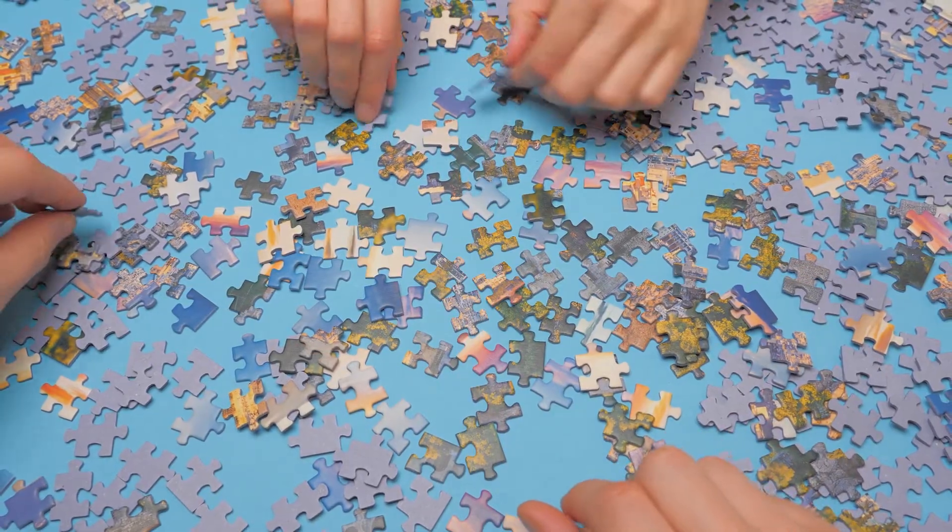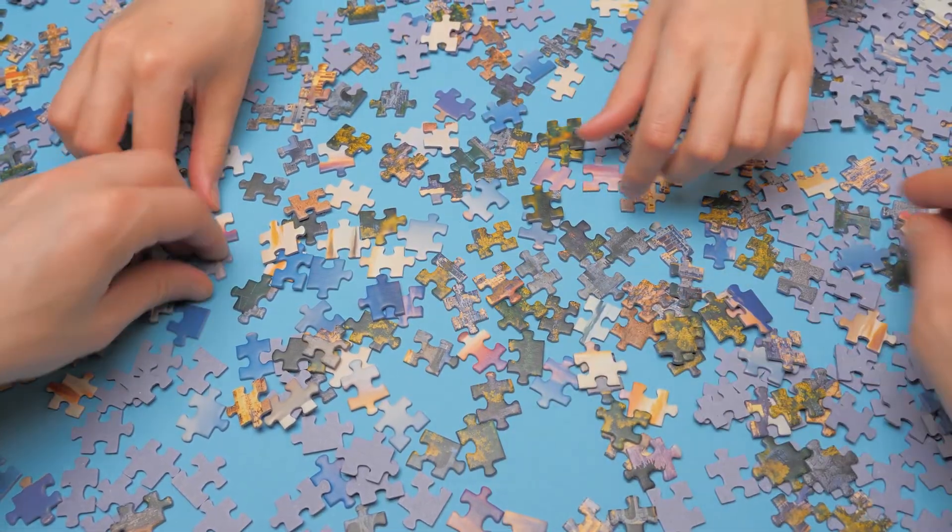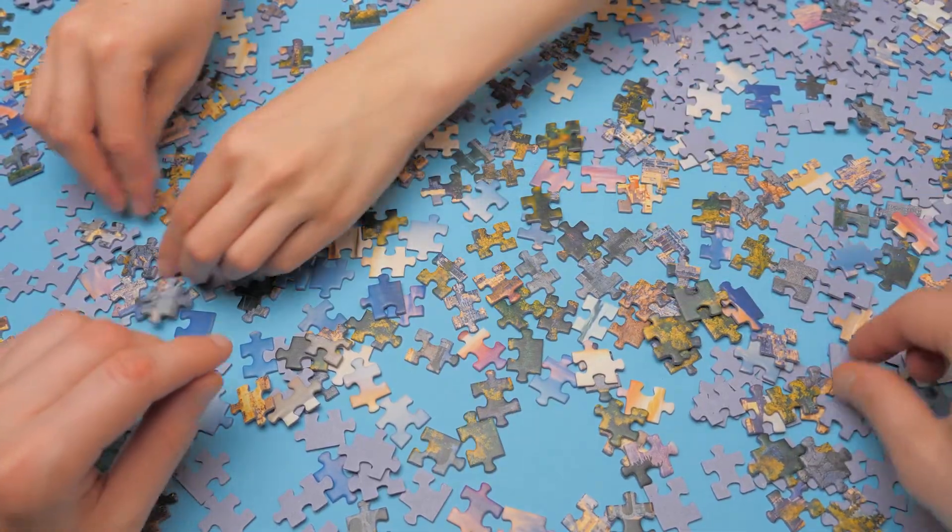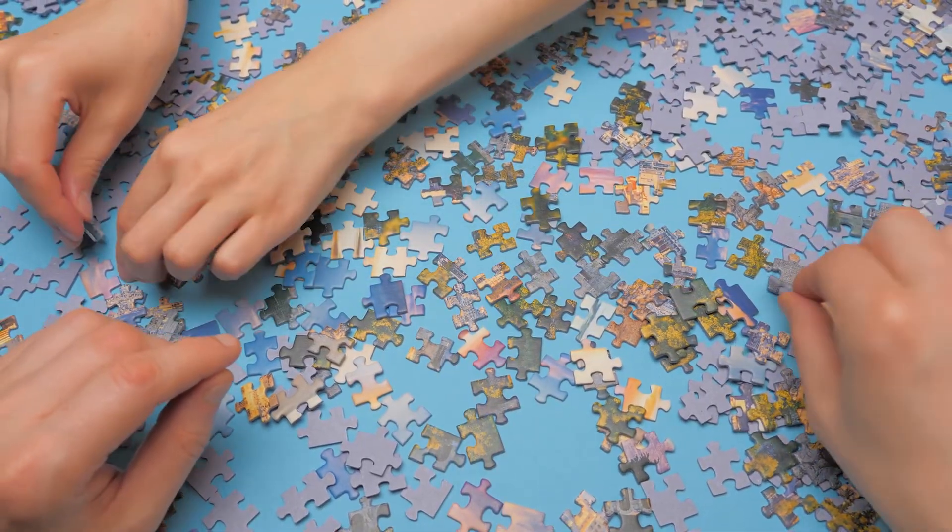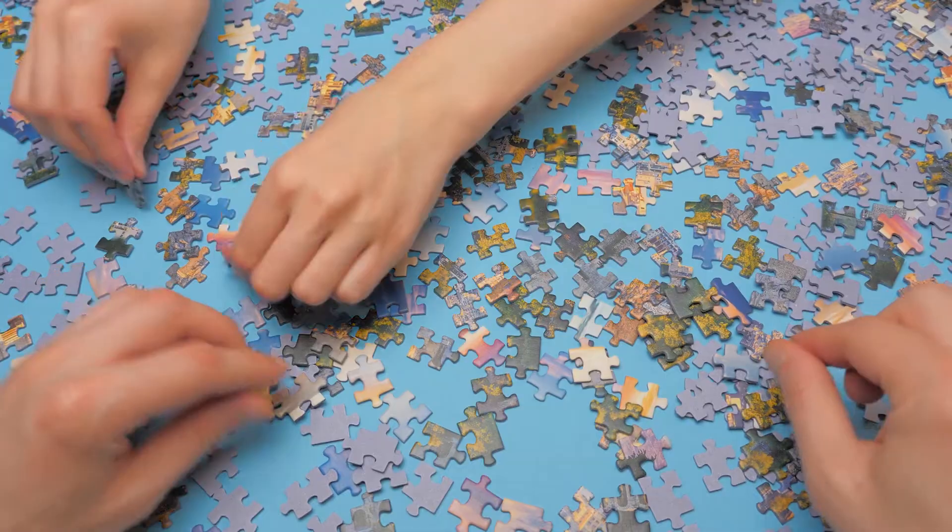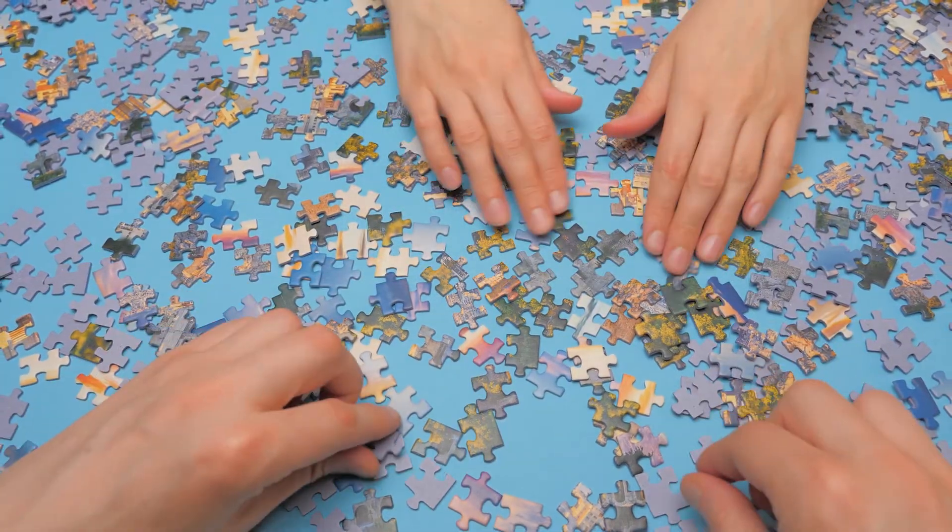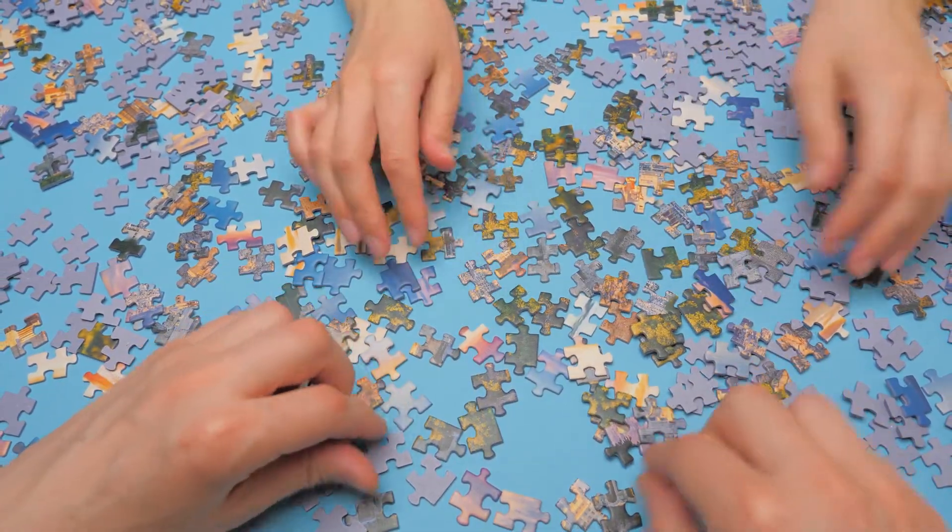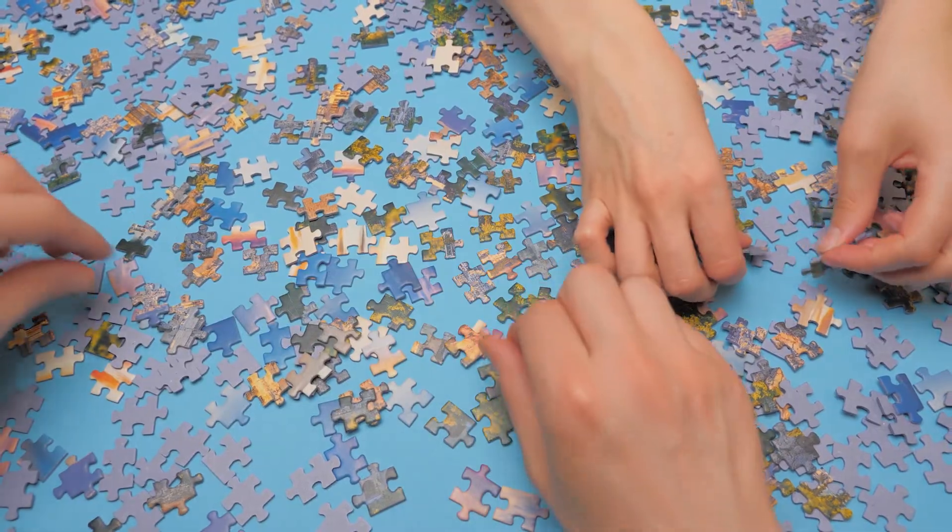To start, you'll probably use top-down processing to complete the outer edges of the puzzle. This is because you've done puzzles before and you'll rely on prior knowledge of puzzles and understand it's fairly easy to start with the edges. Once you're inside the puzzle though, you'll most likely use bottom-up processing to organize the puzzle pieces by colors and try to match different pieces together.